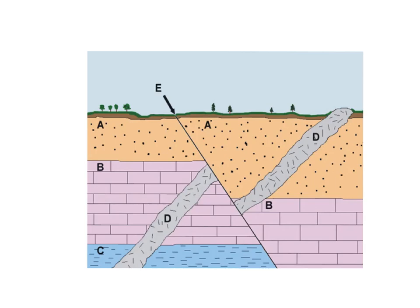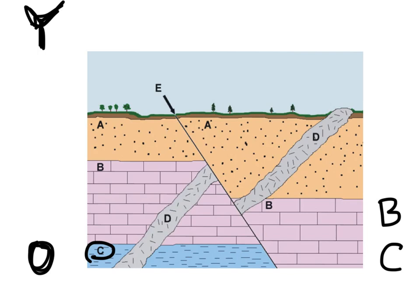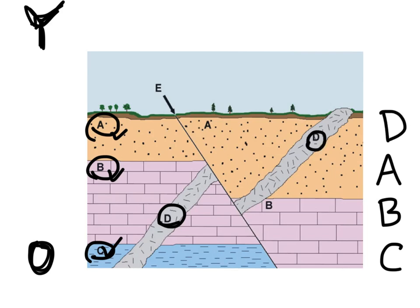Let's look at a problem from a high school geology workbook. I'm going to circle these in the order that they happened using superposition — oldest at the bottom, youngest at the top. The very first thing that happens is layer C is deposited, then layer B on top, then layer A — one, two, three. Then D cut across C, B, and A. And E has to be the youngest thing because E cuts across everything — everything had to be there for E to cut across it.